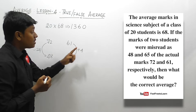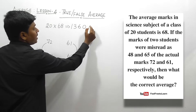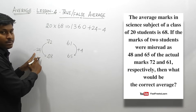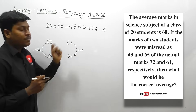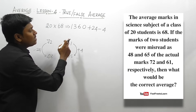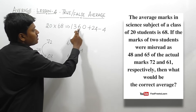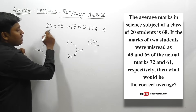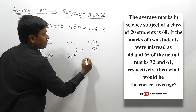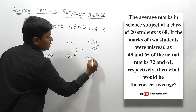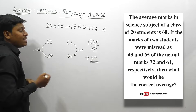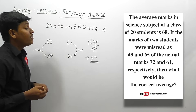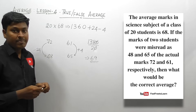We add 24 and subtract 4: 1360 + 24 − 4 = 1360 + 20 = 1380. Then 1380 ÷ 20 = 69. The correct average for the 20 students is 69.